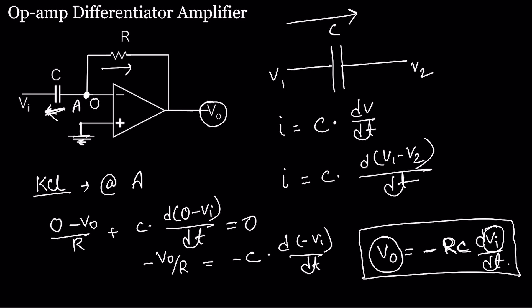If we give a triangular voltage waveform as the input, what do we get at the output? We will get a square wave, because the derivative of a triangular waveform is a constant, giving a square wave. I will do a demonstration using a simulation circuit later in this video.